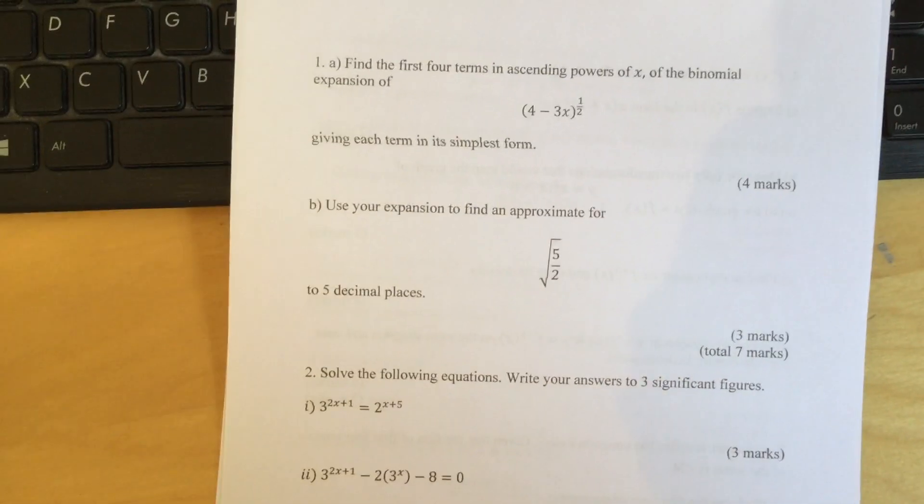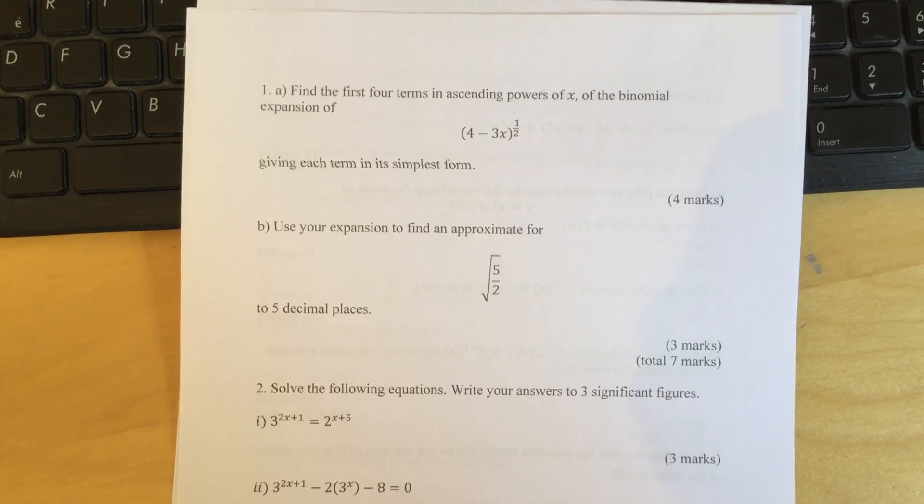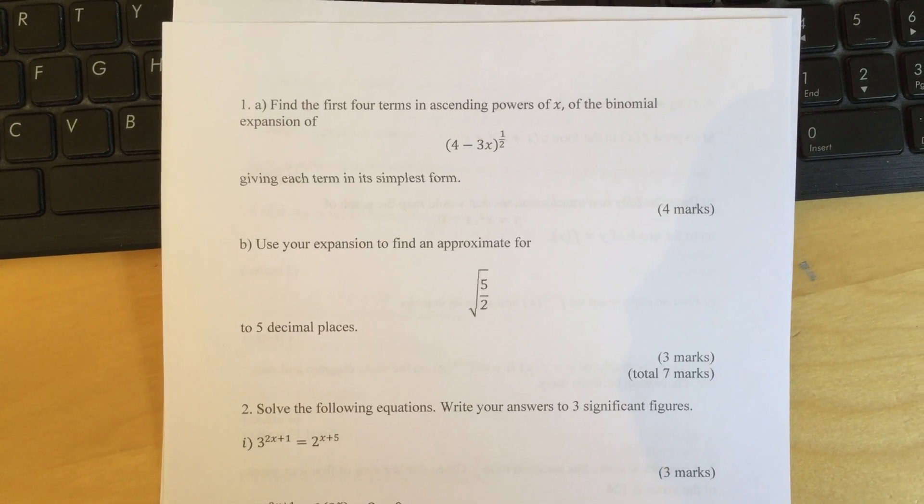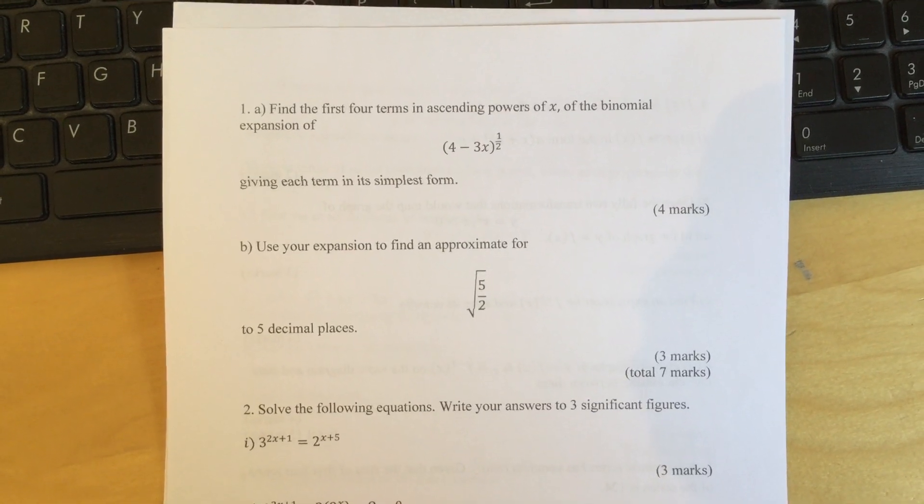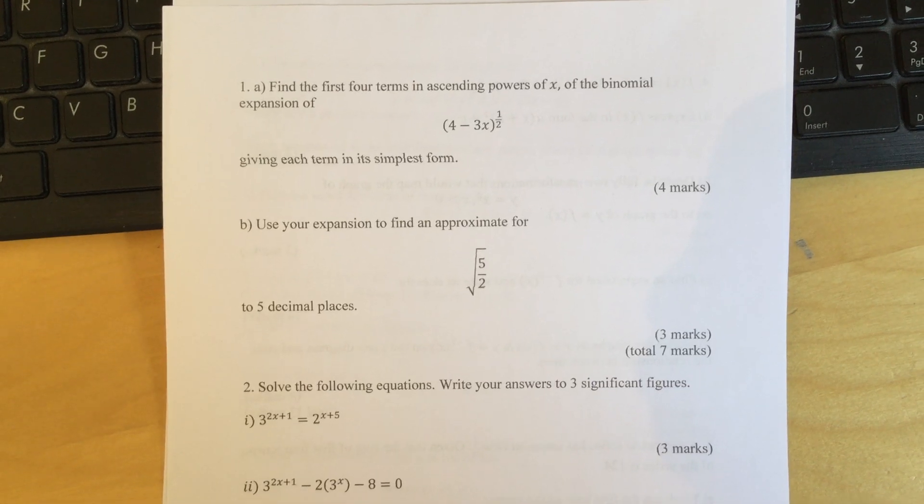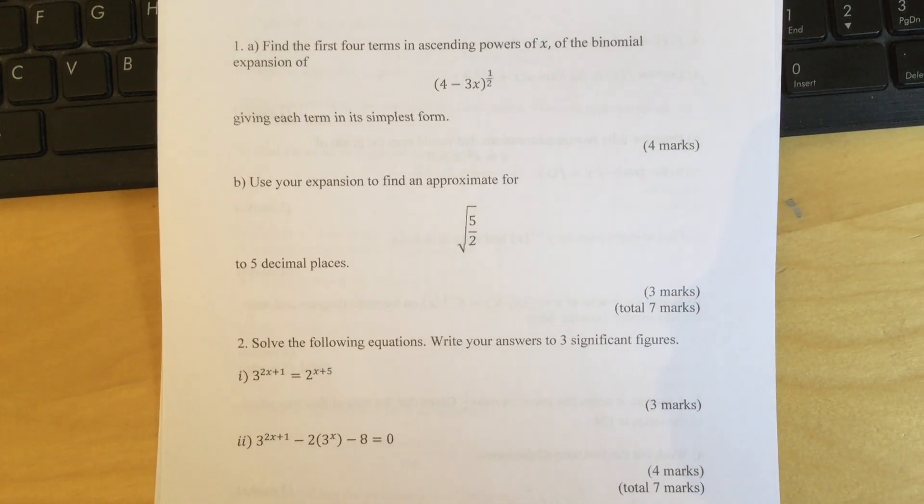I'll read through the questions. Question 1: Find the first four terms in ascending powers of x of the binomial expansion of (4 - 3x)^(1/2), giving each term in its simplest form. Part B: Use your expansion to find an approximation for √(5/2) to 5 decimal places.